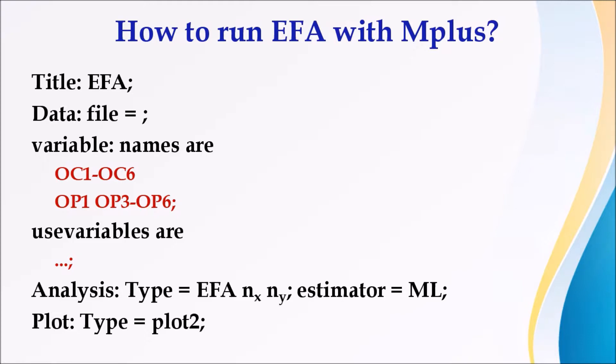Then write Variable colon, names are, here put names of all variables contained in the data file. Space must follow each indicator. However, if your indicators or variables are in the form of a series typical like OC1 to OC6, then you can simply give an array of OC1 dash OC6, so Mplus will consider it six indicators: OC1, OC2, OC3, OC4, OC5, and OC6. If some indicator is missing, then another option is given below.